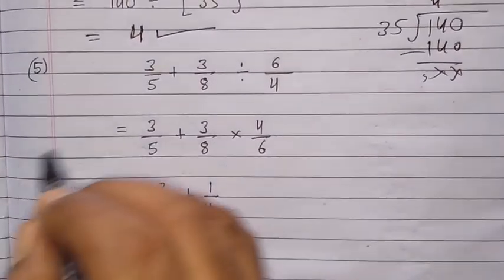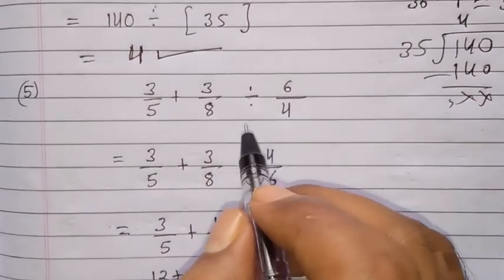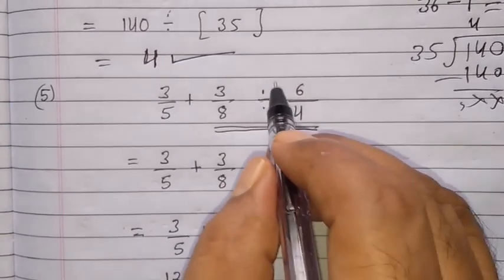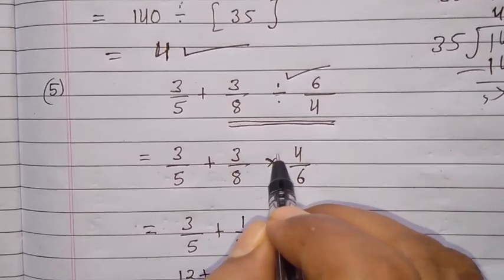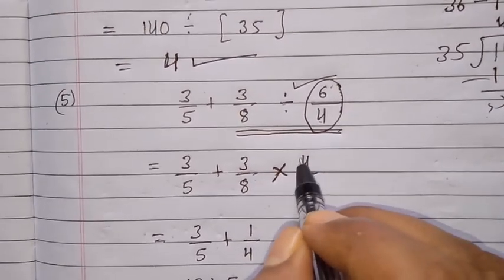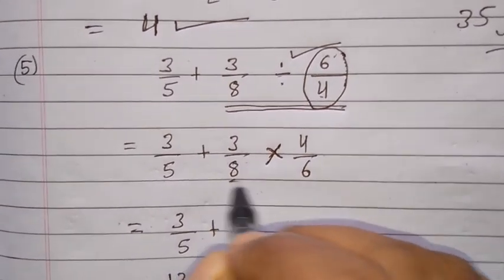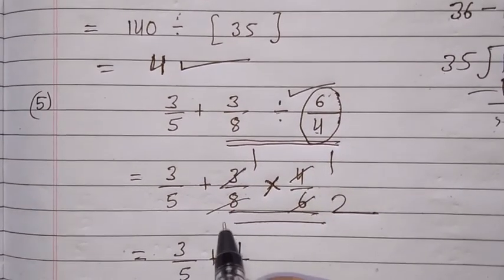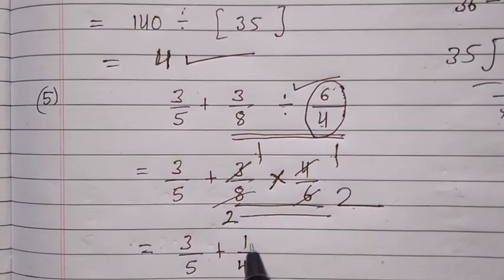Now question number 5: 3 upon 5 plus 3 upon 8 divided by 6 upon 4. According to the rule, we first solve the division part. So 3/8 divided by 6/4 becomes 3/8 multiplied by 4/6 (reverse the fraction). Simplify: cancel 3 with 6 to get 2, cancel 4 with 8 to get 2. So we get 1 × 1 over 2 × 2, which is 1 upon 4.